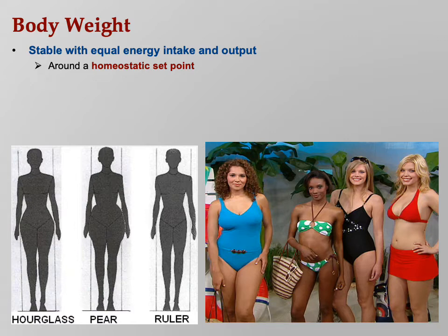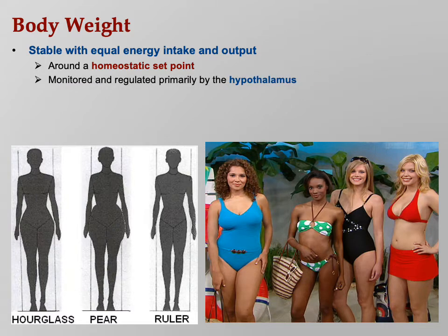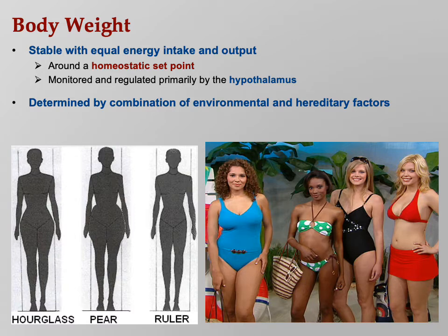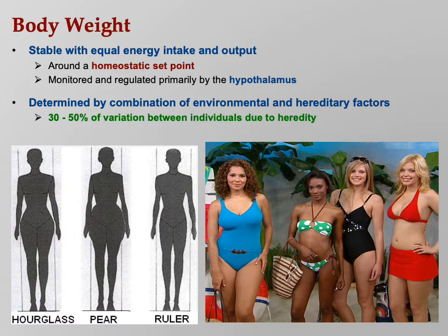Your hypothalamus has a homeostatic set point that tends to keep returning you to a certain weight. That's what some diet programs try to do - they say they're trying to get your hypothalamus to reset its set point, and that works to varying degrees. Environmental and hereditary factors both play a part in our weight. They say maybe 30 to 50 percent is hereditary, so a third to a half of your weight is what you got from your parents, but that means a half to two-thirds is what you do.